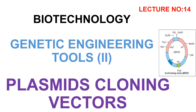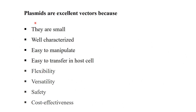In the previous lecture we discussed about plasmids and their types. Plasmids are extra-chromosomal circular DNA having their own origin of replication and exist independently in the cytoplasm. Here we will look at plasmids that are used as cloning vectors.